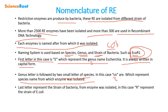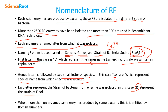The last letter, 'R', represents the strain — in this case, the RY13 strain of E. coli. The Roman numeral 'I' at the end identifies the number of the enzyme, because different restriction enzymes can be produced by the same species or strain.